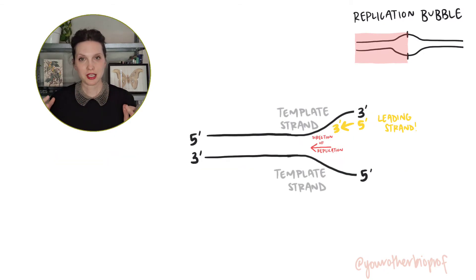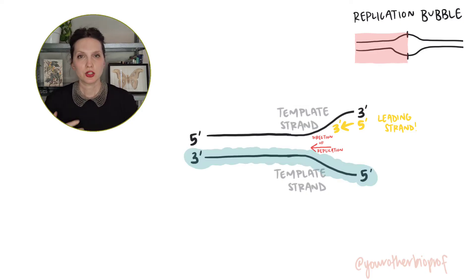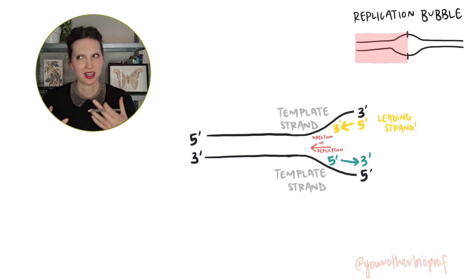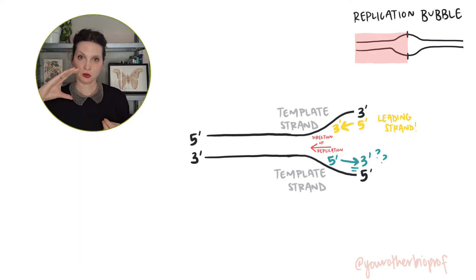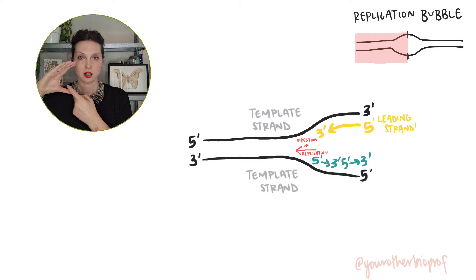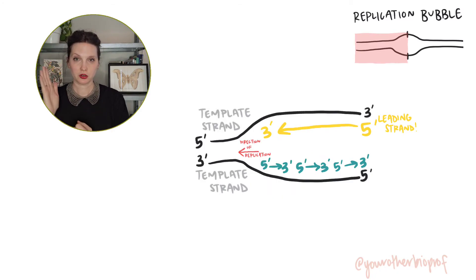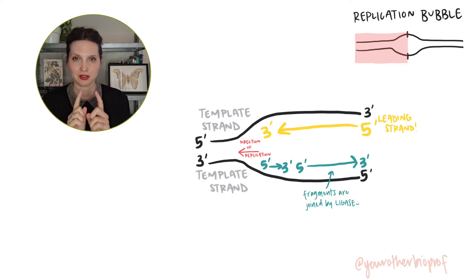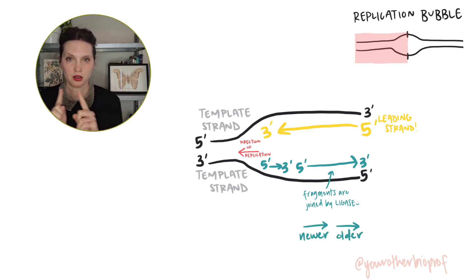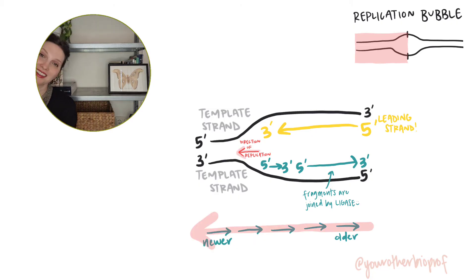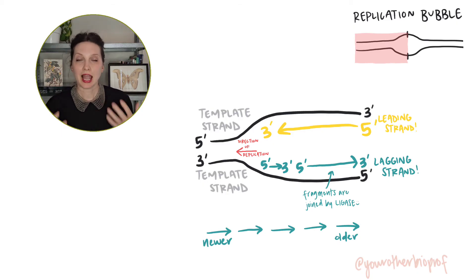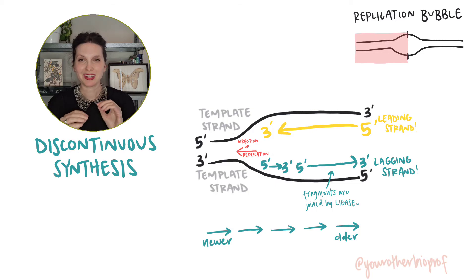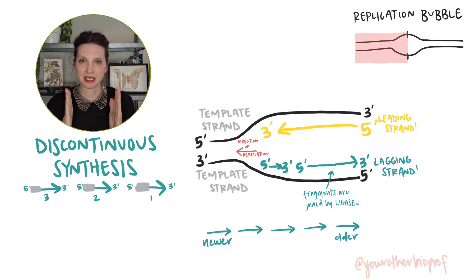Now for the problem child — the other template strand is oriented in the opposite direction. So when we start to create a new strand anti-parallel to that one, it's not going to work out quite as easily. The three prime end of the newly synthesized strand will be facing away from the fork. The way to get around that is to open up the fork, create a little strand, open up the fork more, create another fragment. Our little fragments are synthesized away from the fork, but the overall growth of the strand is into the replication fork. We're talking about making the lagging strand, which is synthesized discontinuously — in lots of little stops and starts. We call those pieces Okazaki fragments.